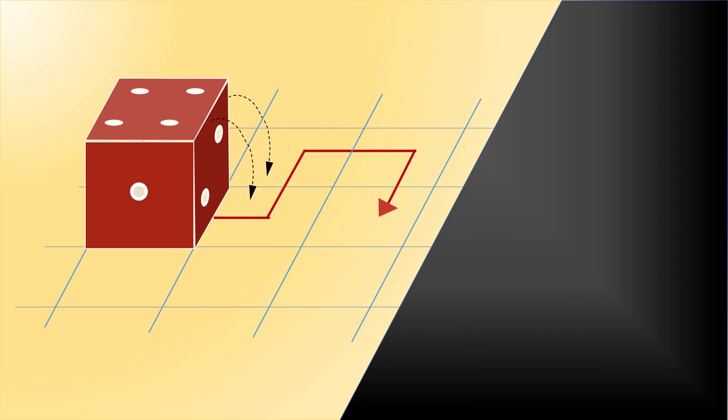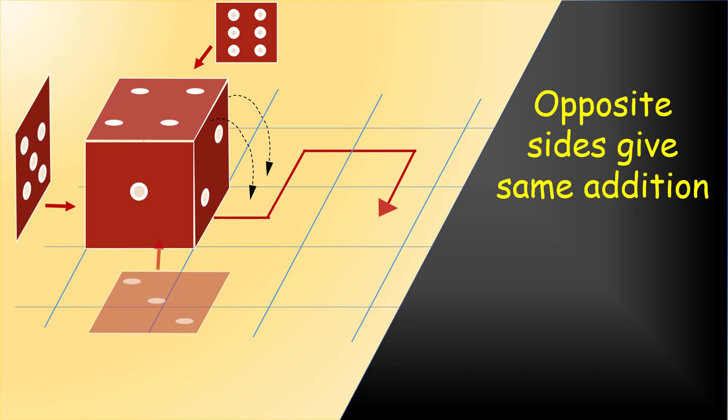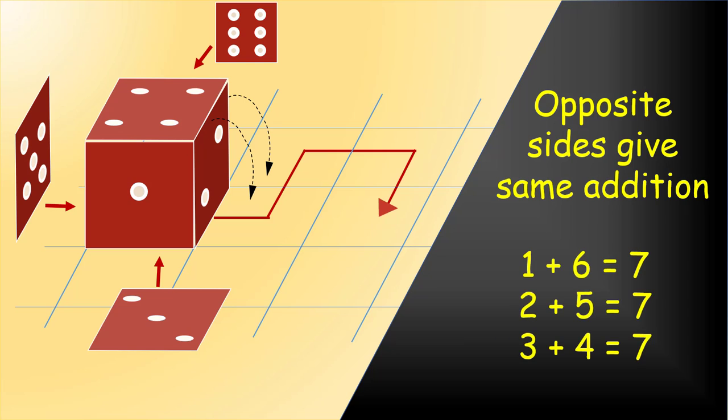Some people may not have an idea about how the remaining numbers are arranged. It's actually very simple. The opposite sides would always give the same addition. So, the number 6 would be opposite to 1, 5 is opposite to 2, and 3 is opposite to 4. The opposite numbers give the same addition, that is 7.